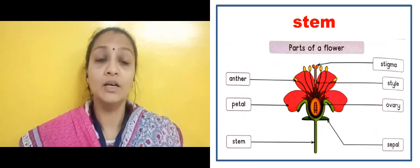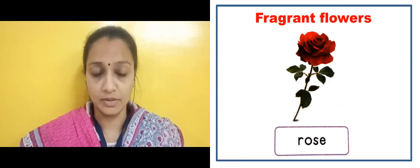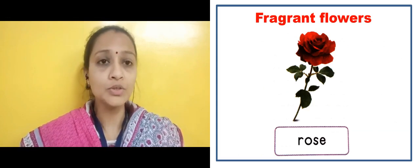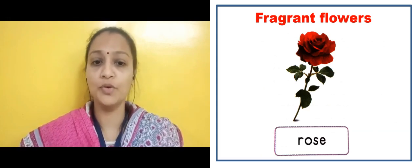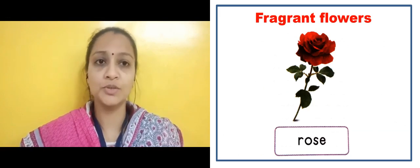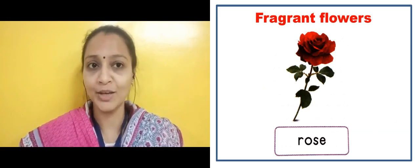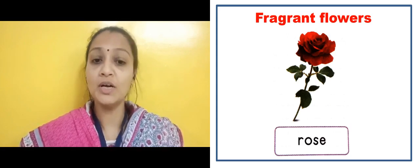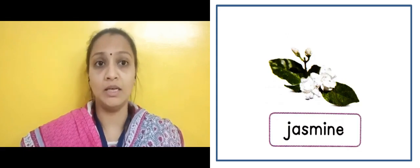Now in next slide, here we will see the fragrant flowers. The fragrance found in flowers — that is known as fragrance. Here you can see the image of a Rose — R-O-S-E. This is known as Rose. It comes in different colors.